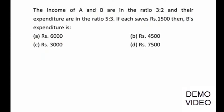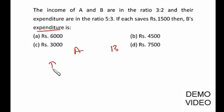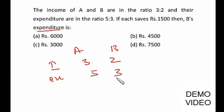Now in this case the income of A and B are in the ratio 3:2 and their expenditures are in the ratio 5:3. If each saves rupees 1500, we have to find out the expenditure of B. The difference between the income ratio terms is 1, and the difference between the expenditure ratio terms is 2, so we cannot make the comparison directly. We need to convert the income ratio difference to 2.